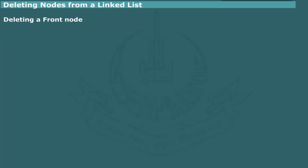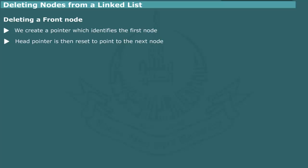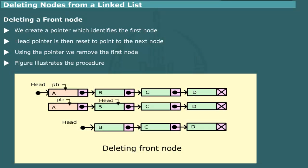Deleting a front node. In order to delete the front node of a list, we create a pointer which is set to identify the first node. The head pointer is then moved to point to the next node. Using this pointer, we remove the first node. Figure illustrates the procedure for deleting the front node of a sample list containing A, B, C, and D.